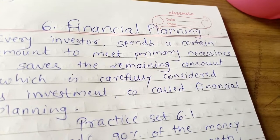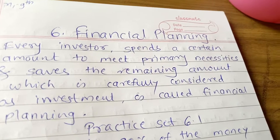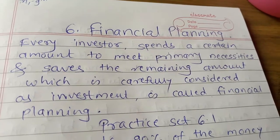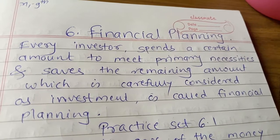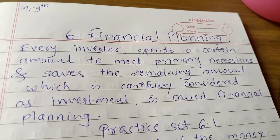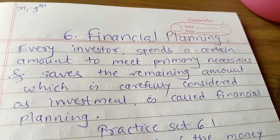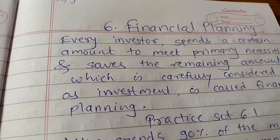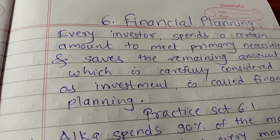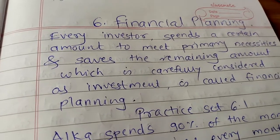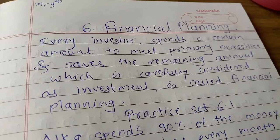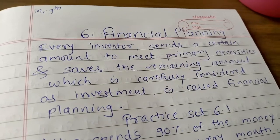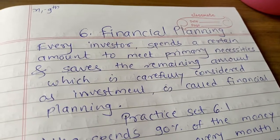The money left after spending on the necessities of the present — everyone saves money for future provision — is called savings. To keep savings safe and for it to grow, we keep it as a fixed deposit or buy immovable properties; that is called investment. So we can invest in a bank or post office.